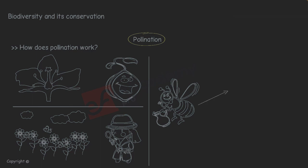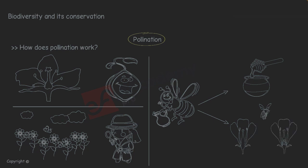Nectar, which turns to honey, serves as food for the bees. And as the bees pass through each flower, the pollen sticks from the plant's anther onto the bee's legs and then gets transported to the stigma. This makes up pollination.